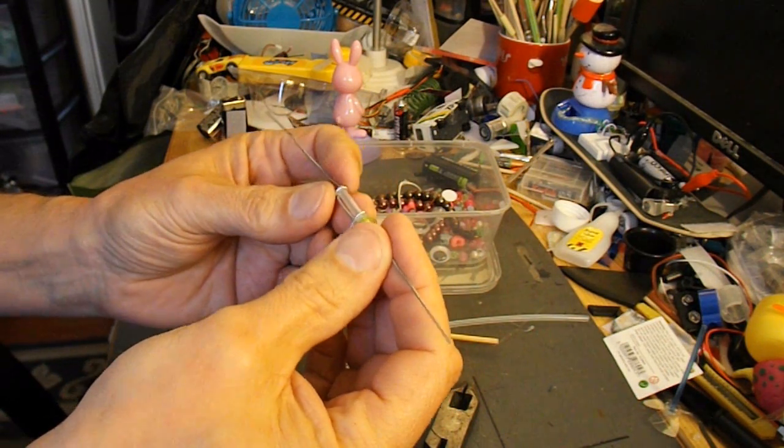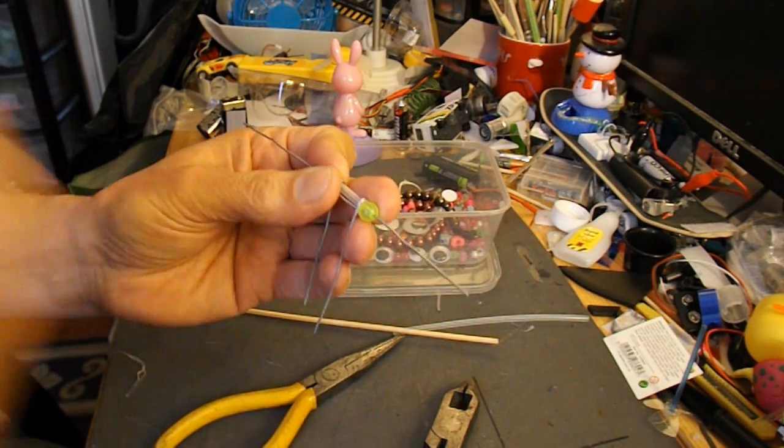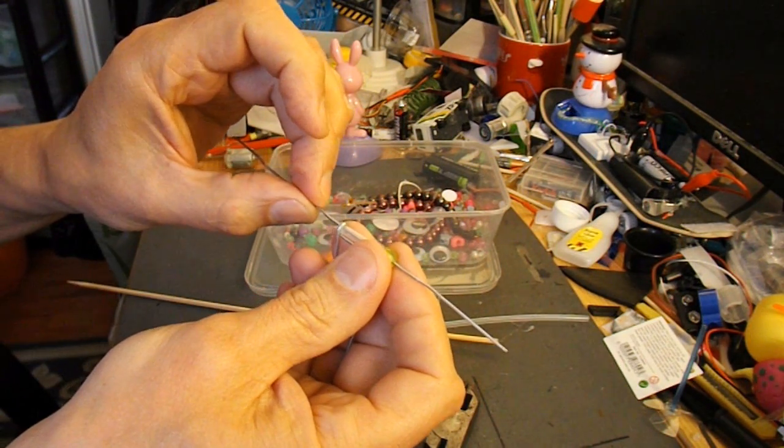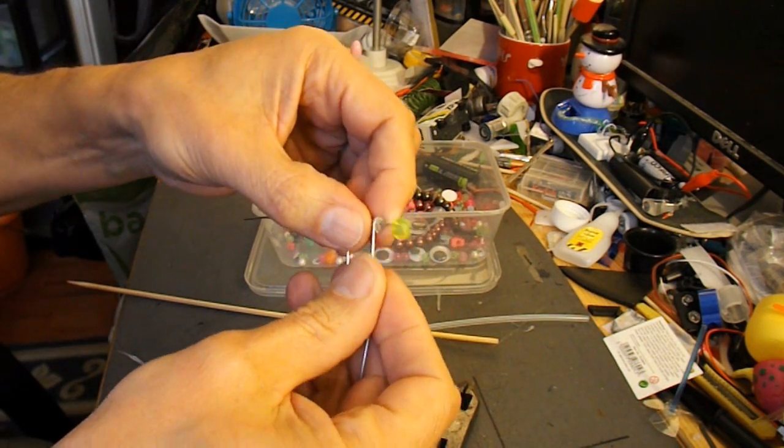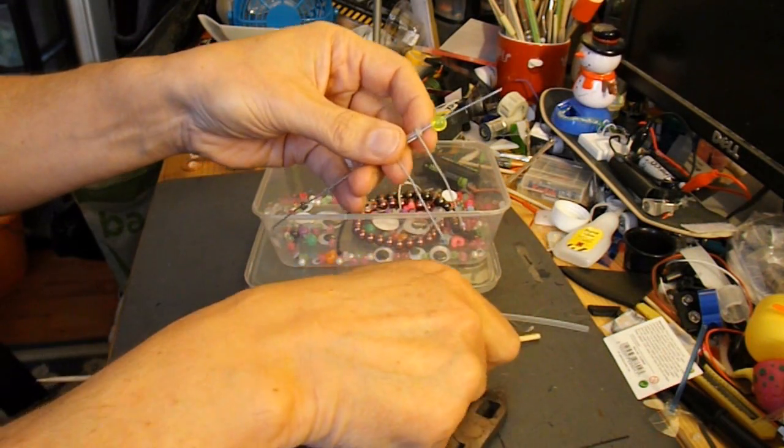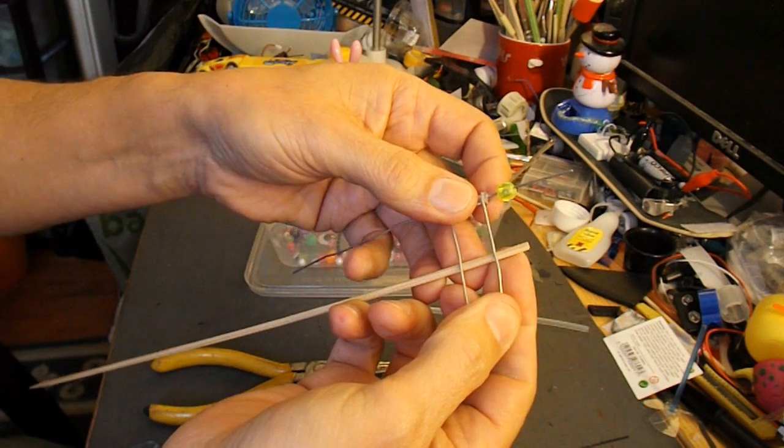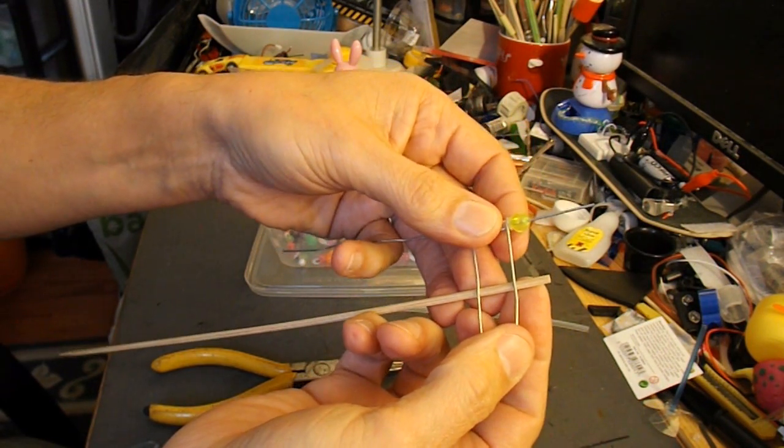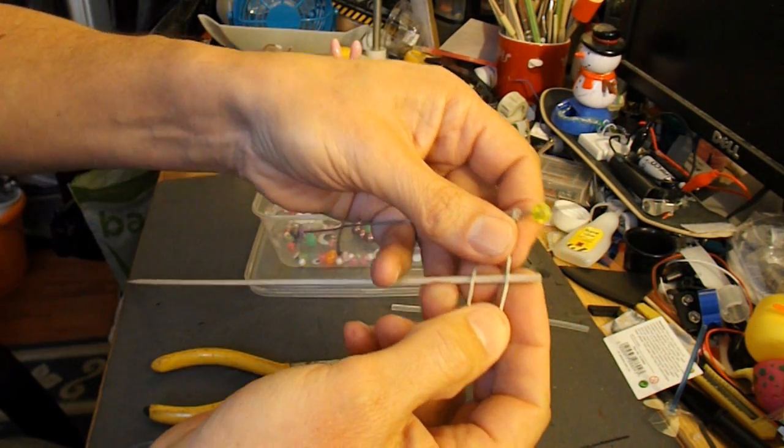What we now need is a propeller on this end, and a hook on the other end for the rubber band to go round. And then this piece we need to attach to the fuselage of your aeroplane. Which, in my case, is this barbecue skewer.